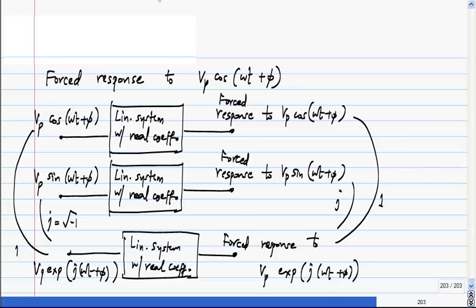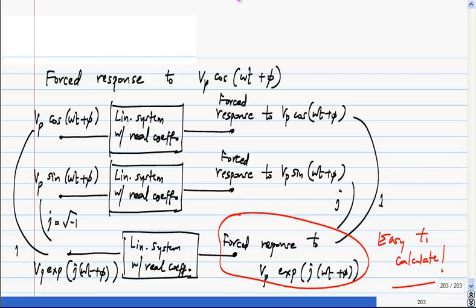So the point is that this is easy to calculate. We do that, but what we are really interested in is the response to Vp times cos(ωt + φ), right? That is the signal we are feeding in. Now because the linear system had only real coefficients, the only place where you get this square root of minus one or the j, the imaginary part in the whole picture, is because you multiplied it here. So to go back to this, you take the real part.